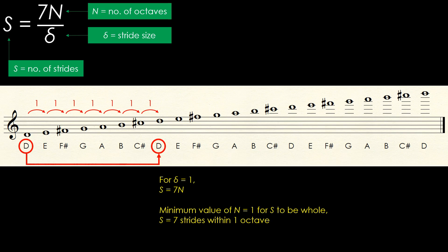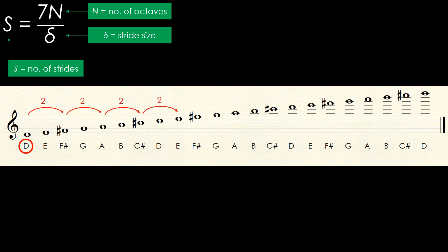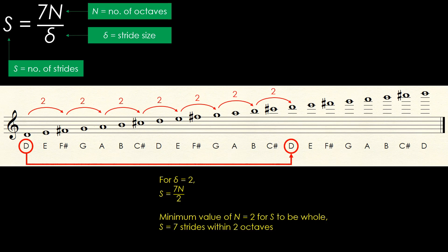Now, let's investigate the case where delta is 2. We get s equals 7n over 2. This expression only returns a whole number when n is a minimum of 2. When that happens, the number of strides becomes 7. n equals 2 here means that it takes only 2 octaves for the stride to reach the starting note.